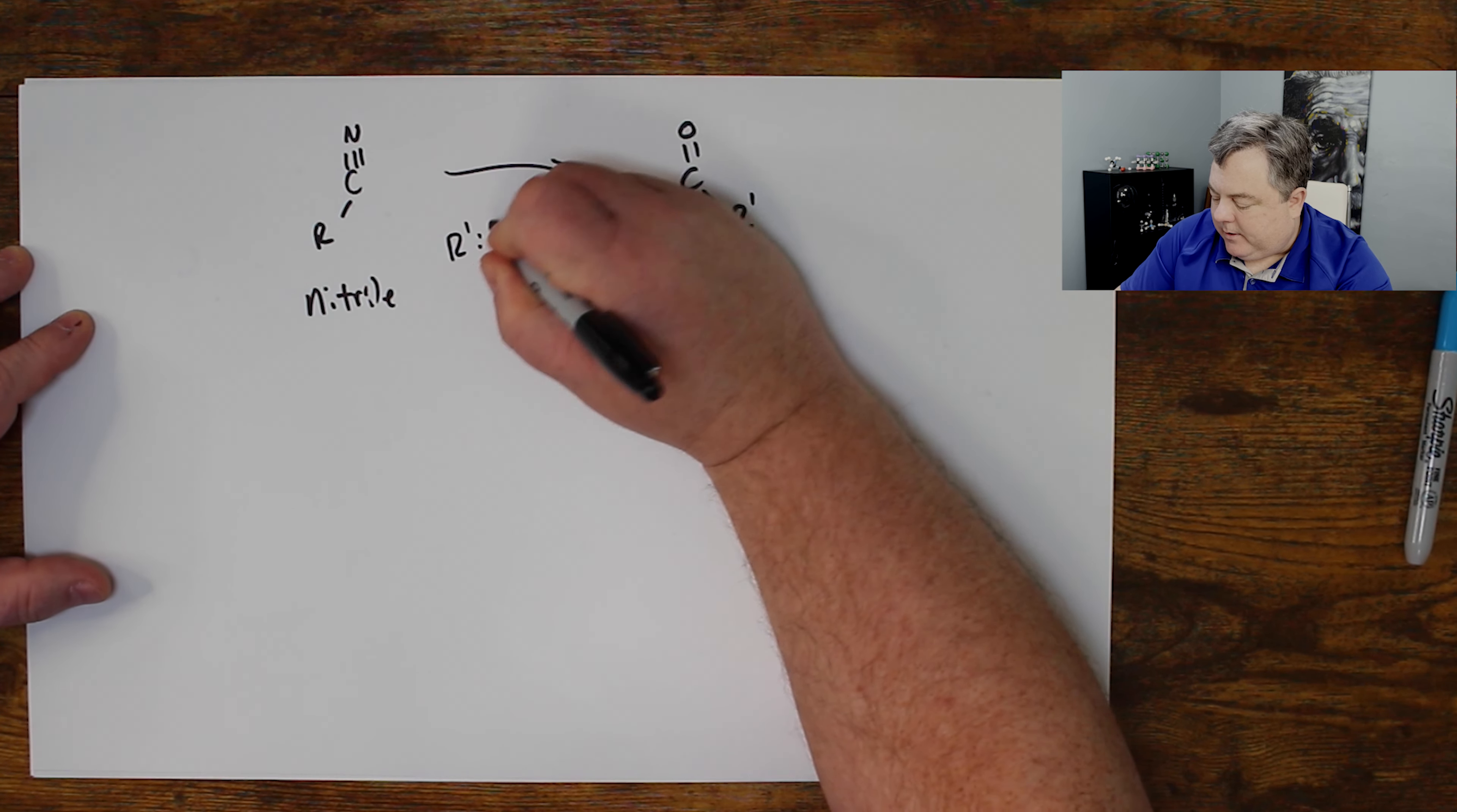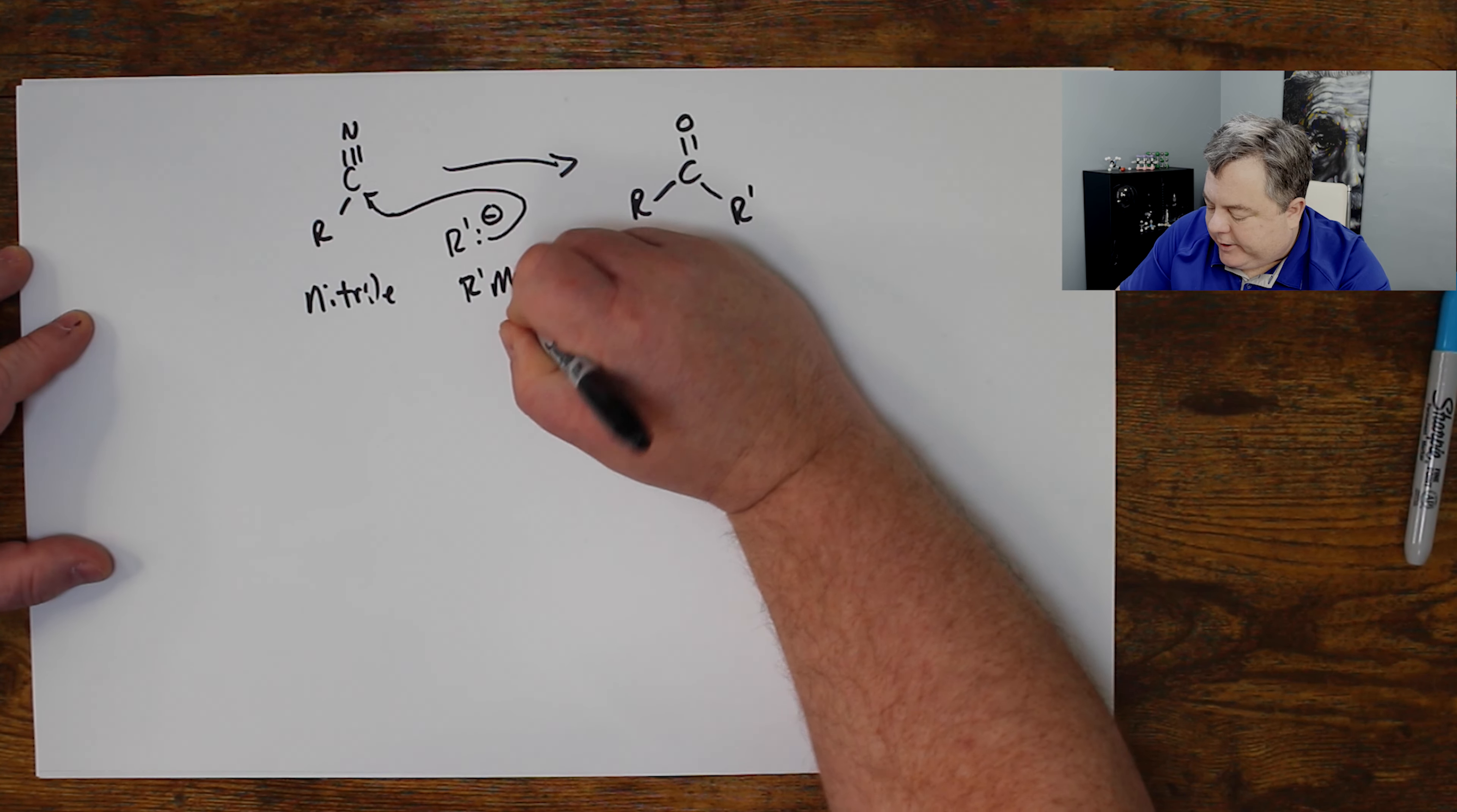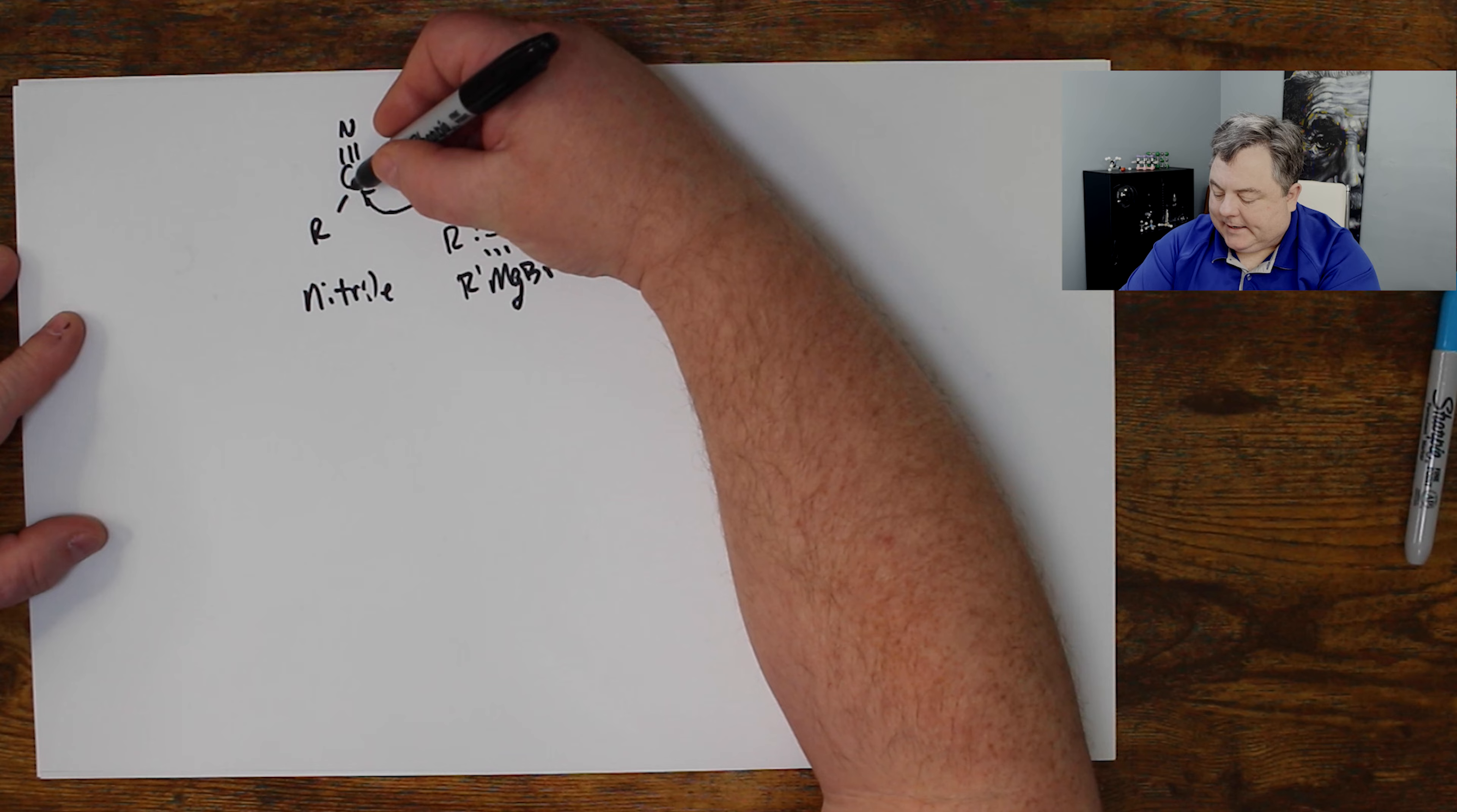So I need a carbon that is an attacking carbon that will come in and attack that carbon right there. So I could use a Grignard reagent as my attacking carbon group. These are the same thing. So this negative carbon attacks this carbon.